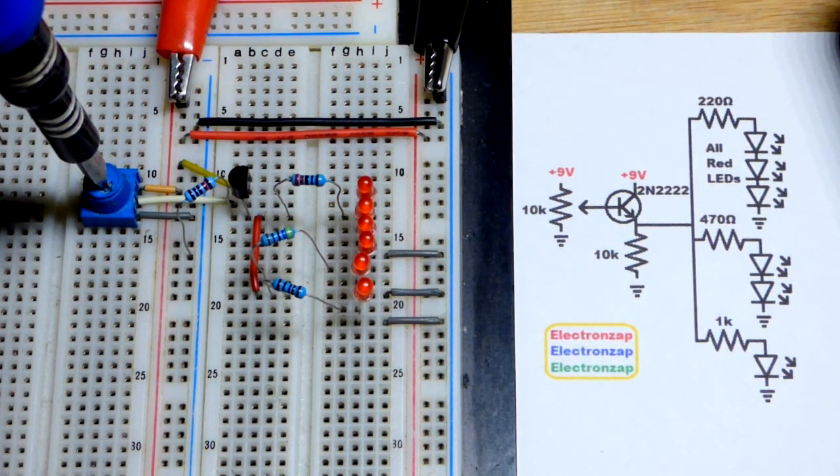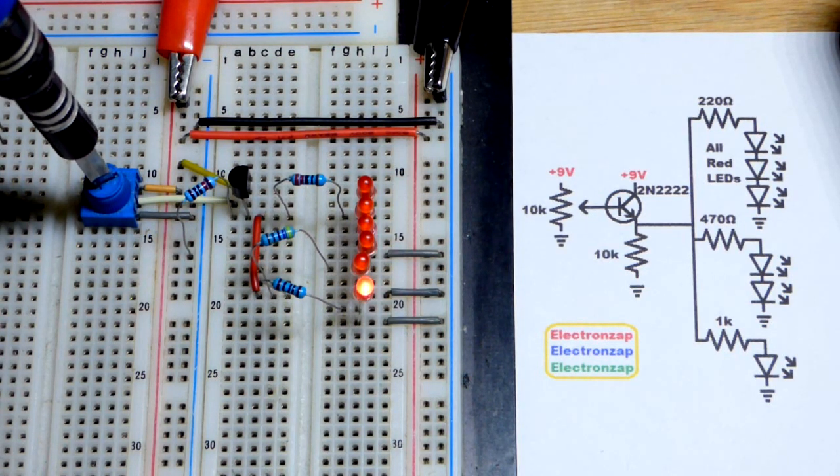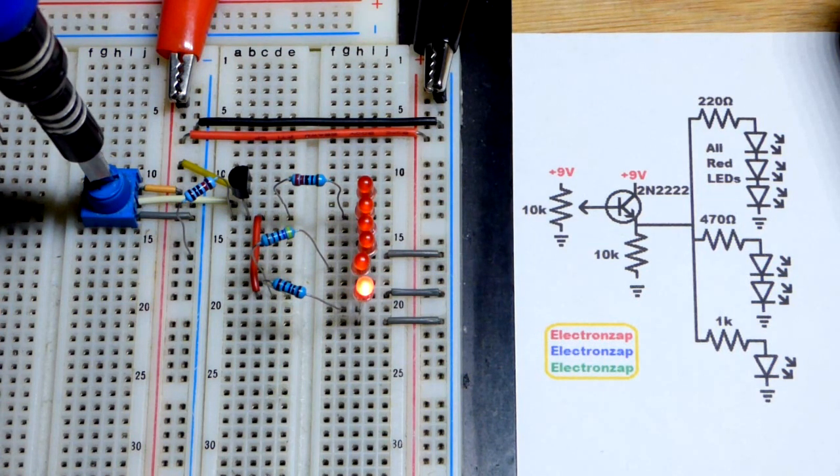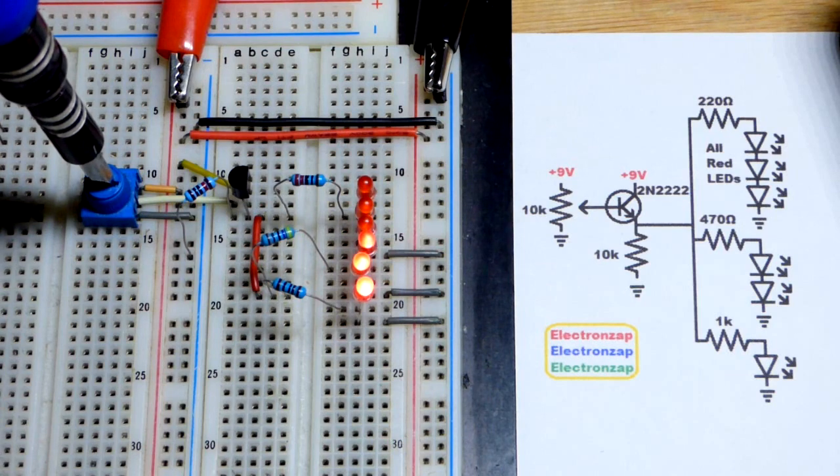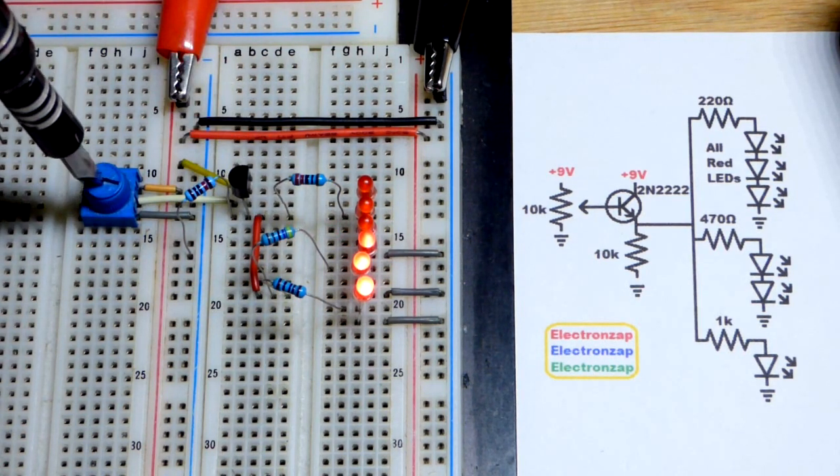As I turn the voltage of this trim pot up, it could be any voltage source. We're using the transistor as an amplifier. There you can see that the bottom LED lit up. As I keep turning the voltage up, the next two LEDs light up. They should light up at the same time, but the one at the bottom seems a little bit more eager to light up.